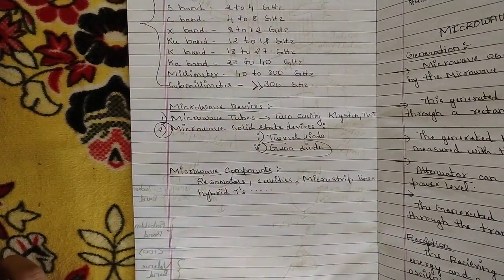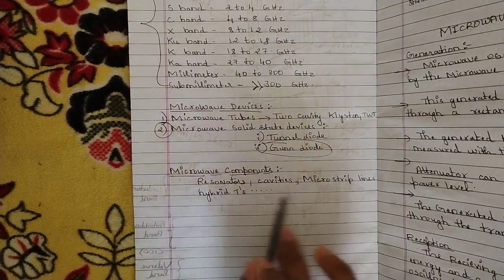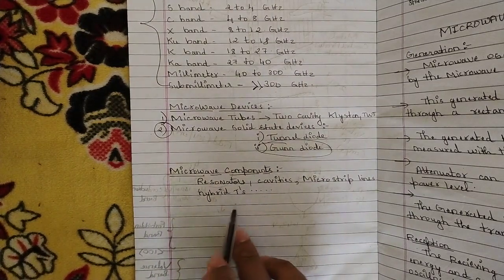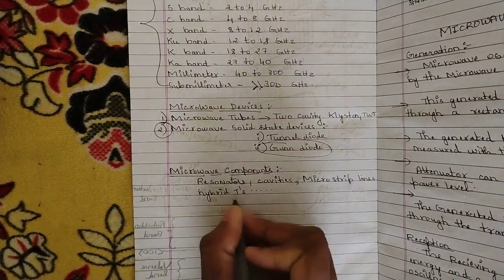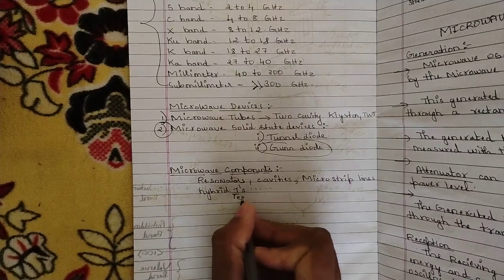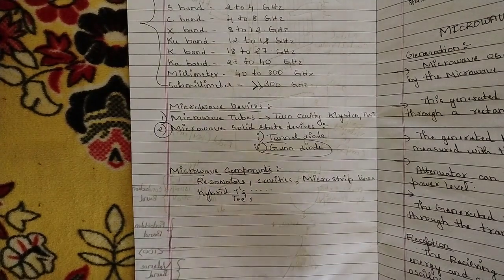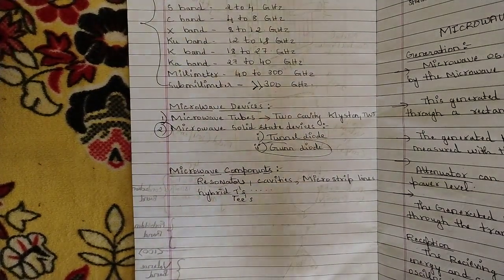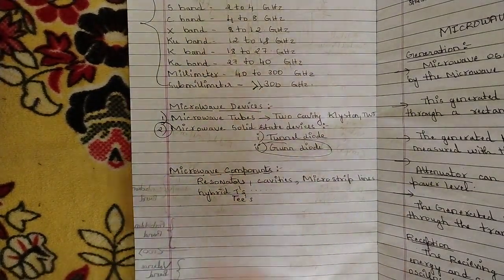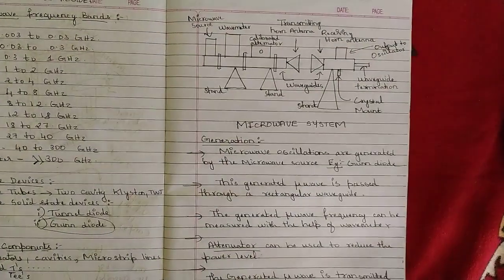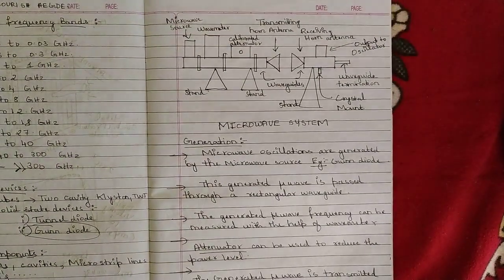Under microwave components, you should know a few key components: resonators, cavities, microstrip lines, and hybrid tees. These microwave components and their applications will be discussed in Module 2. Now let us start with the first concept in the syllabus — the Microwave System.